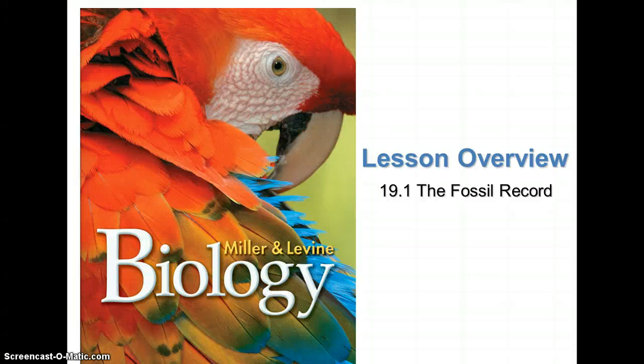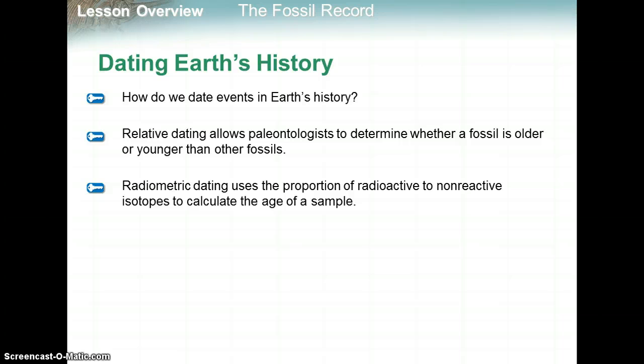We're going to cover section 19.1, which is about the fossil record. We're going to talk about two ways of determining the age of a fossil: relative dating and radiometric dating.